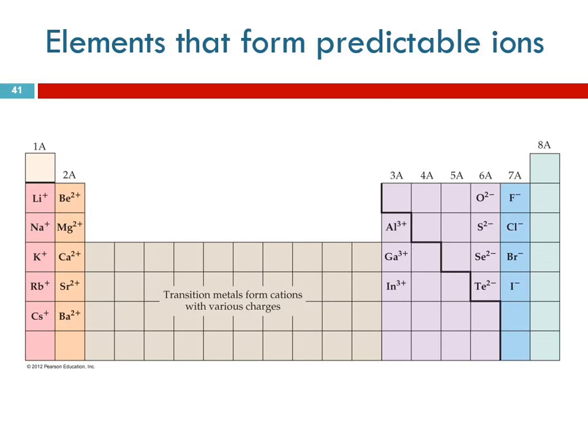So groups 1A and 2A form ions with the same charge as the group number and these guys in group 3A do that as well. Aluminum has three valence electrons, it will lose all three of them to become like neon.